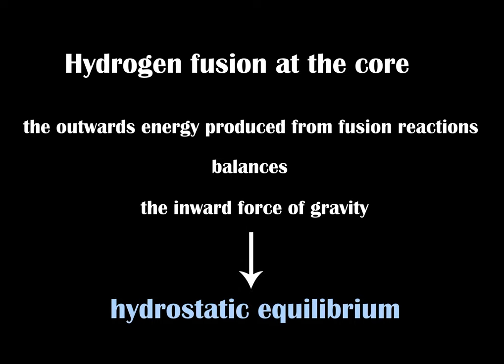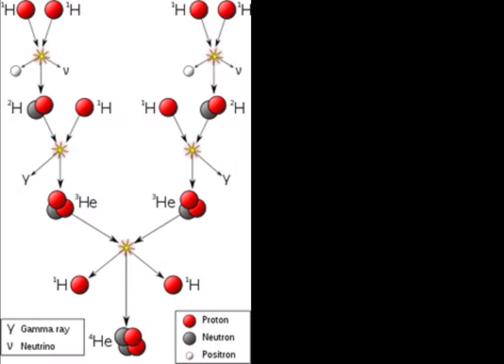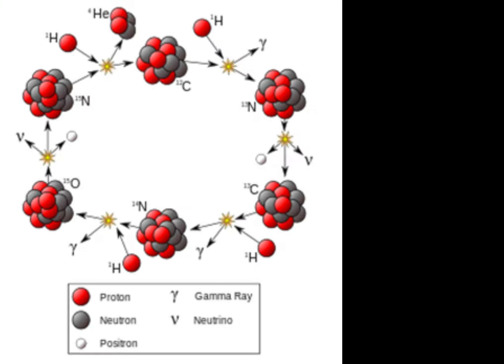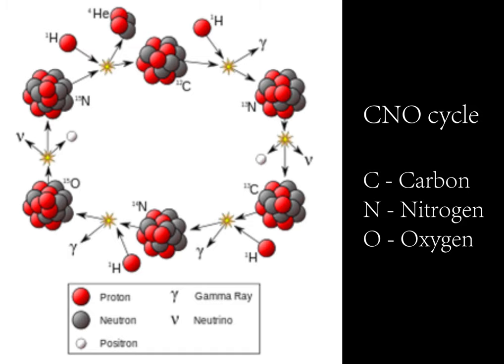This stage takes up the majority of the star's lifetime. For stars around the size of our sun, the hydrogen fusion undergoes the proton-proton chain reaction. Such reactions have the lowest fusion energy requirements, as the reaction only involves hydrogen and helium. For larger and younger stars that have other elements in their core, they fuse hydrogen into helium using the CNO cycle. The heavier elements have a higher binding energy, therefore only larger stars with hotter cores have sufficient energy to carry out such reactions.